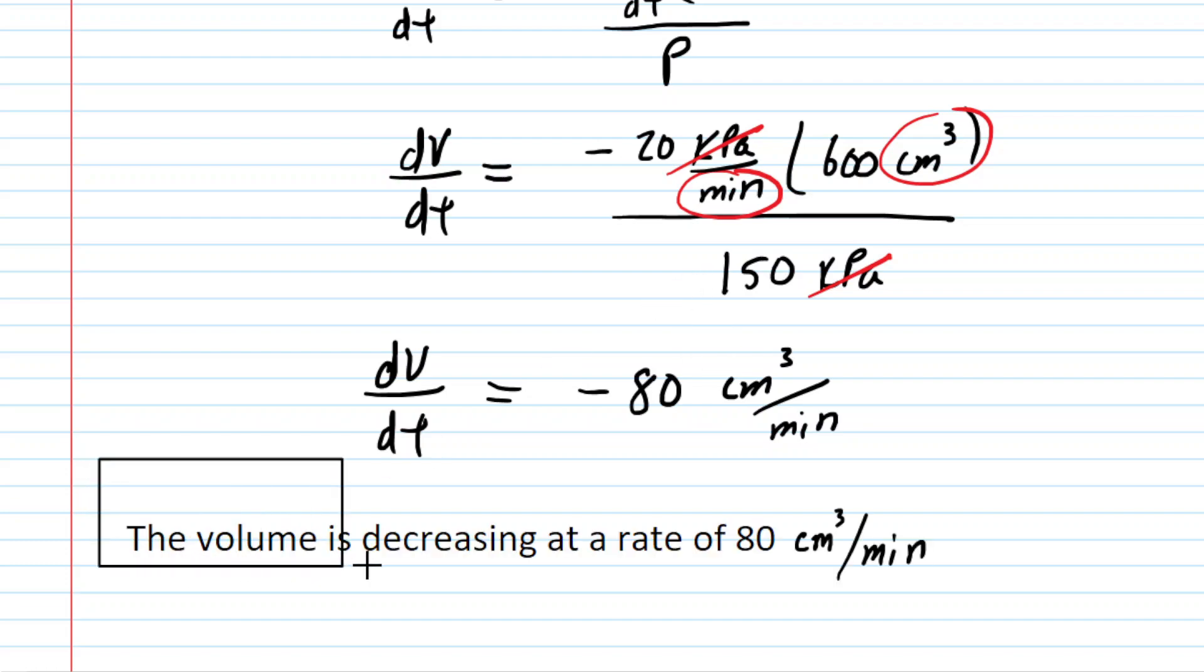We have the volume is decreasing at a rate of 80 centimeters cubed per minute. Notice that because we are stating the volume is decreasing that means we do not have to include the negative sign in this statement because the word decreasing implies a negative rate of change.